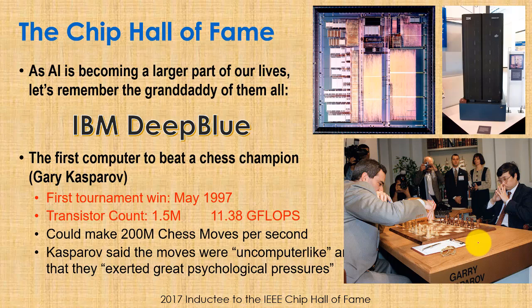The first time it won a whole tournament was in May 1997. There were 1.5 million transistors on the main chip, providing 11.38 giga floating-point operations per second. It could make 200 million chess moves per second. Kasparov said the moves were uncomputer-like and that they exerted great psychological pressures on him as a chess player. Deep Blue was inducted into the IEEE Chip Hall of Fame in 2017, and we just wanted to commemorate it.